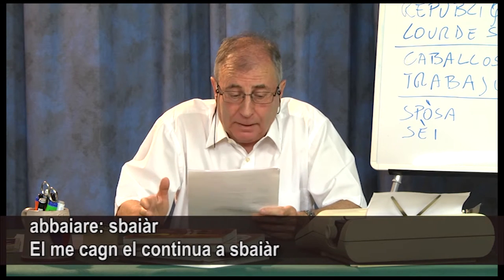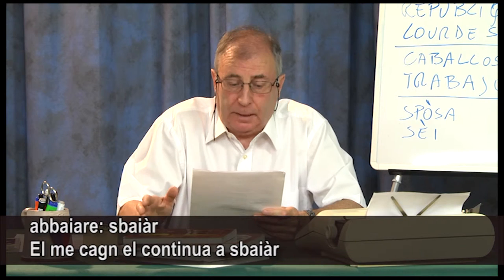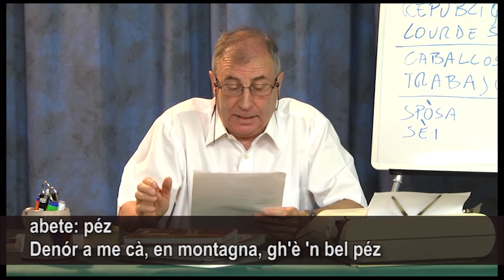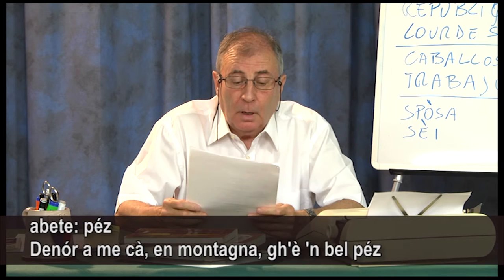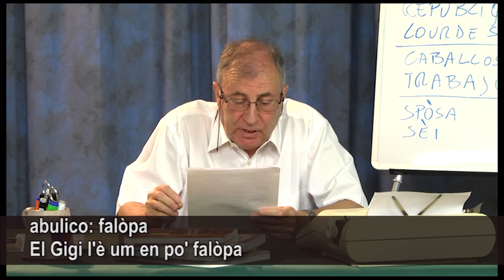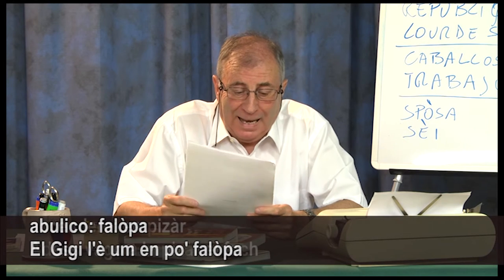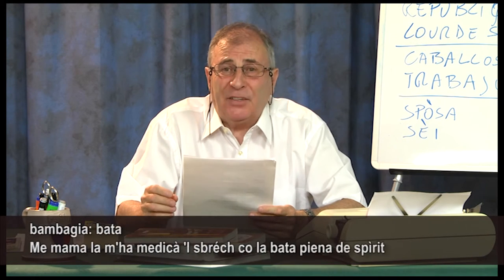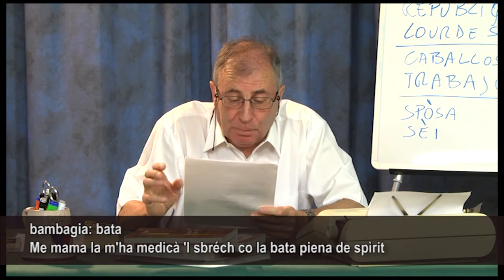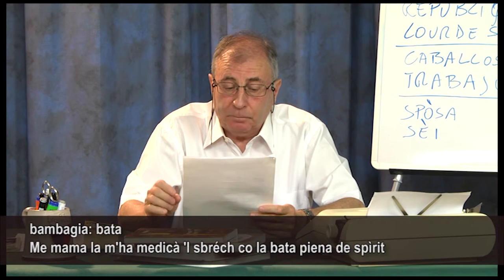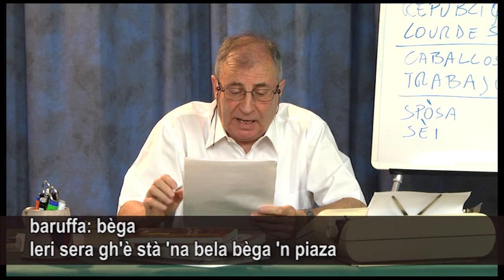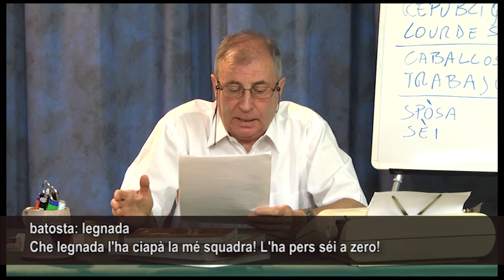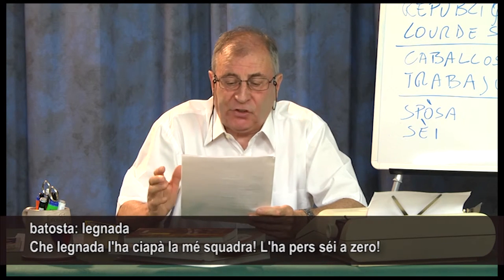Abbaiare → sbagliare, e il meccan el continua a sbagliare. Abete → pez: 'denora mecca e montagna, gembel pez'. Abulico → falopa: 'el Gigi l'è omen po' falopa'. Accendere → impizzare: 'adesso vago a impizzare el foc'. Bambagia → bata: 'mi mama la medicava i sbrec con la bata piena de spirit'. Baruffa → bega: 'ieri sera ghe stava una bella bega in piazza'. Batosta → legnada: 'che legnada la ciapala a me squadra, la persa sei a zero'.